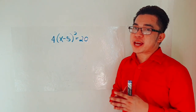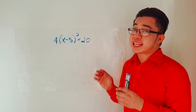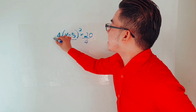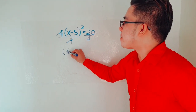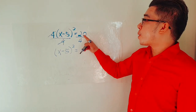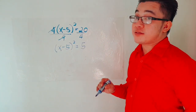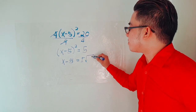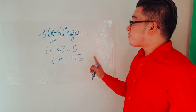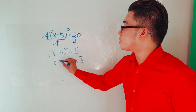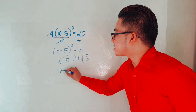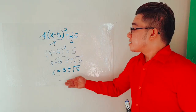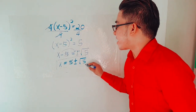Example number 6: 4 times the quantity of x minus 5, squared, is equal to 20. The first thing we need to do is divide both sides by 4, so we can cancel the 4. We get the quantity of x minus 5 squared is equal to 20 divided by 4, which equals 5. Then extract square roots: x minus 5 is equal to positive and negative square root of 5. Since 5 is not a perfect square, the next step is to transpose negative 5 to the other side. So x is equal to 5 plus and minus square root of 5. Since you cannot combine these terms, this is already the final answer.